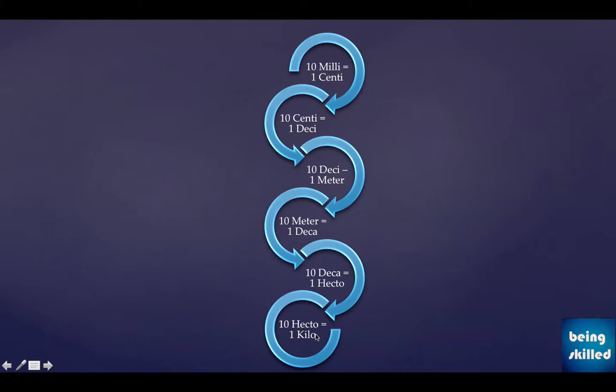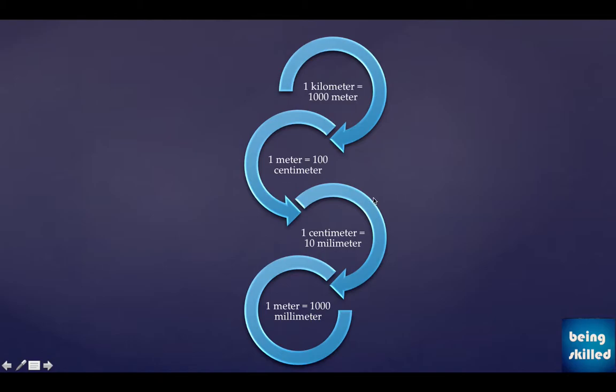Ten hectometers equals one kilometer. The most commonly used relations are: one kilometer equals one thousand meters, one meter equals one hundred centimeters, one centimeter equals ten millimeters, and one meter equals one thousand millimeters.